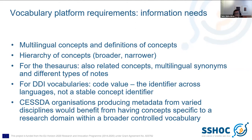The information needs include concepts and their definitions in different languages, hierarchy of concepts, and for the thesaurus: related concepts, multilingual synonyms, and different types of notes. The DDI vocabularies also have a code value, which is the identifier used across languages, but it's actually not a stable concept identifier — it's not a PID — so this information also needs to be in the system.